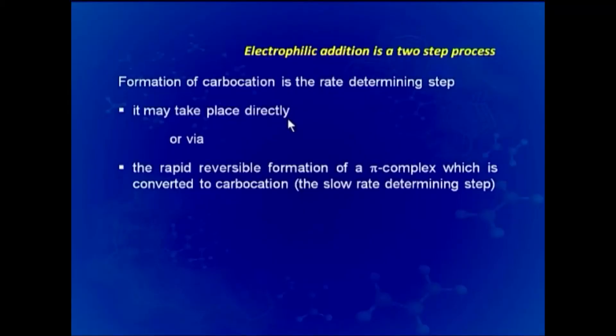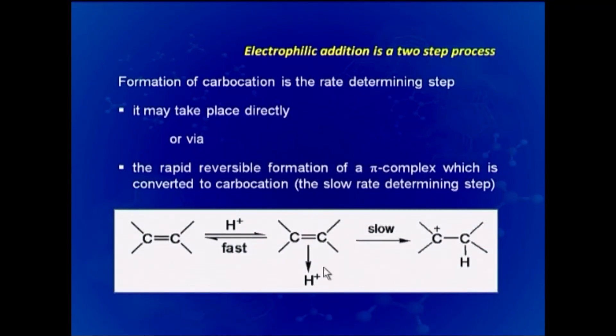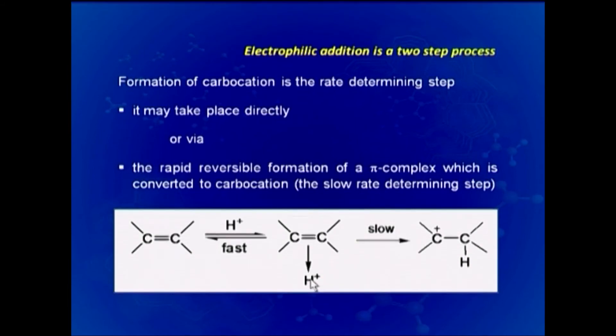Formation of the carbocation is the rate-determining step. It may take place directly or via rapid reversible formation of a pi complex which is then converted to the carbocation. H+ acts as the electrophile in this reaction, forming a carbocation in the slow rate-determining step. The two bromine atoms appear anti to each other in the product.